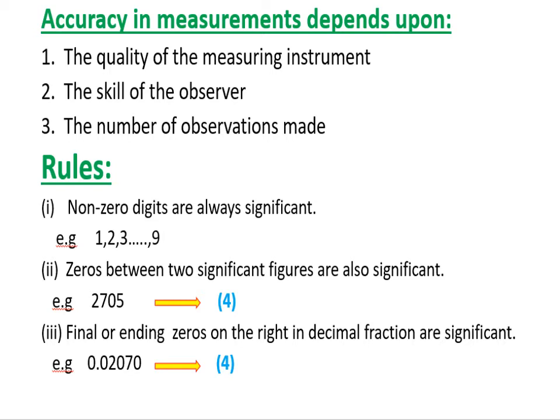For example, the number 2,705 — the non-zero digits are 2, 7, 0, and 5. How many significant figures are there? Four.